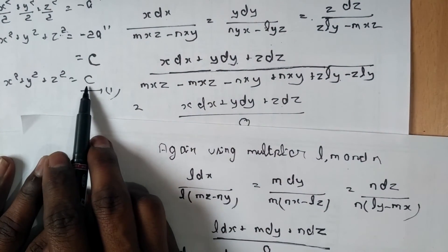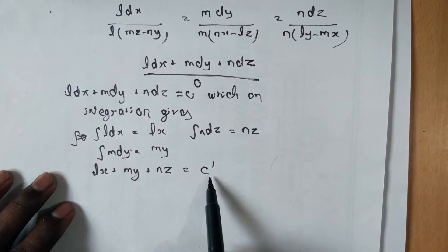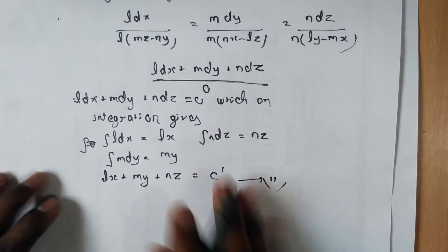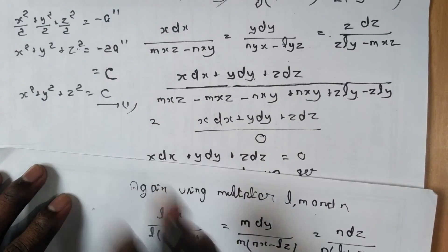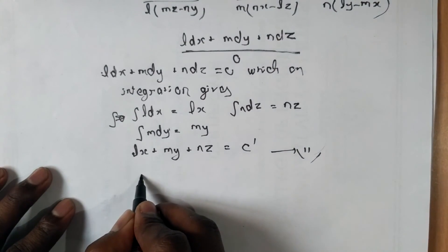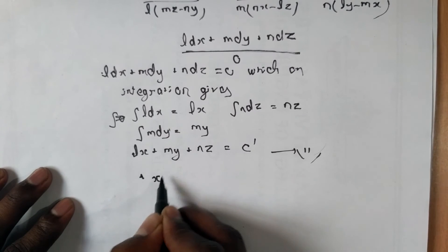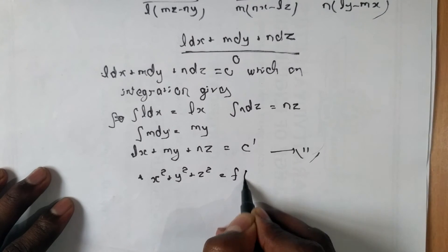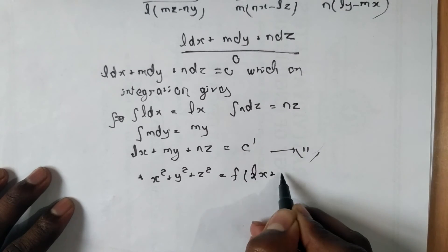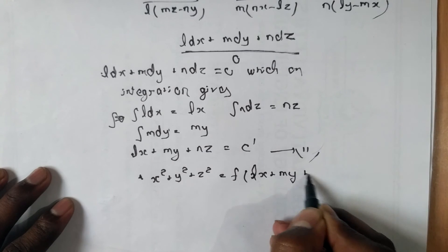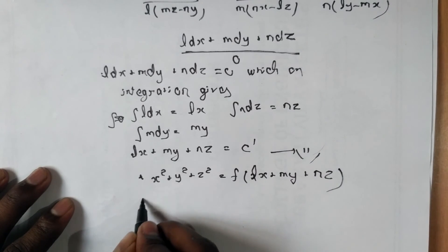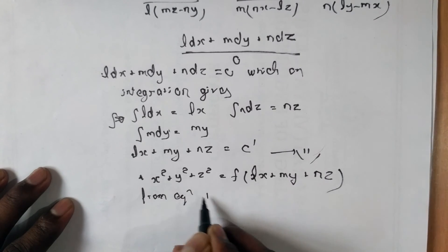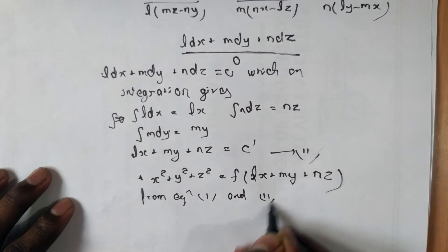In the first case we have constant c, and in the second case we have a constant c dash. Now from equation 2 and from equation 1, we can write x square plus y square plus z square is equal to f(lx + my + nz) from equations 1 and 2.